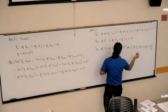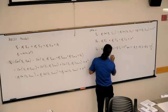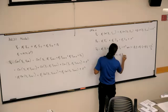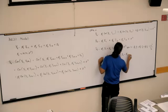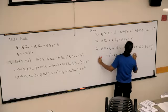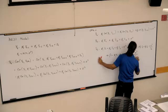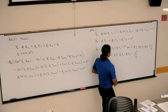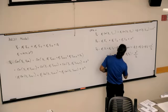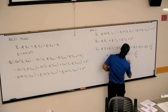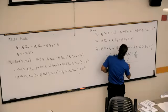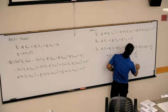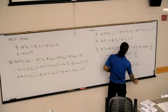So, if I rewrite this, I'll have 1 minus phi 1 rho 1, minus phi 2 rho 2, minus phi 3 rho 3, equals sigma squared over gamma nought. So, we want to solve for gamma nought, so gamma nought would simply be equal to sigma squared over 1 minus phi 1 rho 1, minus phi 2 rho 2, minus phi 3 rho 3.